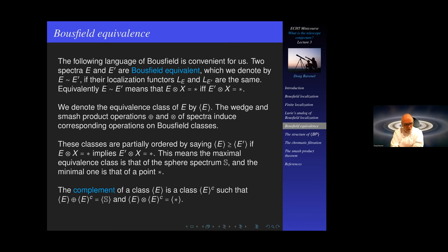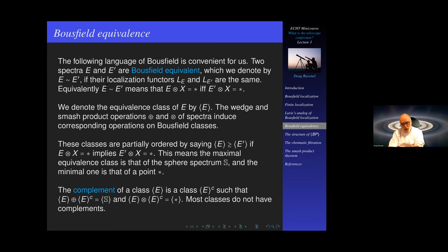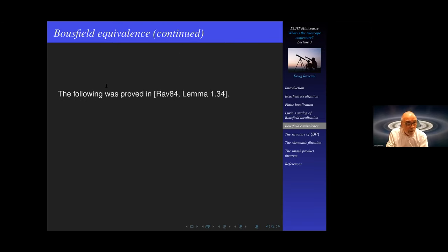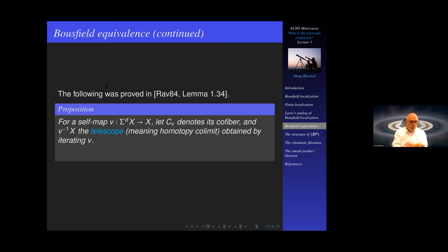You can do wedge and smash product operations, which induce corresponding operations on Bousfield classes. There is also a partial ordering: ⟨E⟩ ≥ ⟨E'⟩ if E ∧ X being contractible implies E' ∧ X is contractible. The maximal class is that of the sphere spectrum S, and the minimal one is that of a point. A theorem of the Japanese mathematician Okawa proved that the collection of Bousfield equivalence classes is a set. There is also a notion of a complement of a Bousfield class — a class whose wedge with ⟨E⟩ equals ⟨S⟩ and whose smash product with ⟨E⟩ is contractible — but most Bousfield classes, including that of HZ, do not have complements.